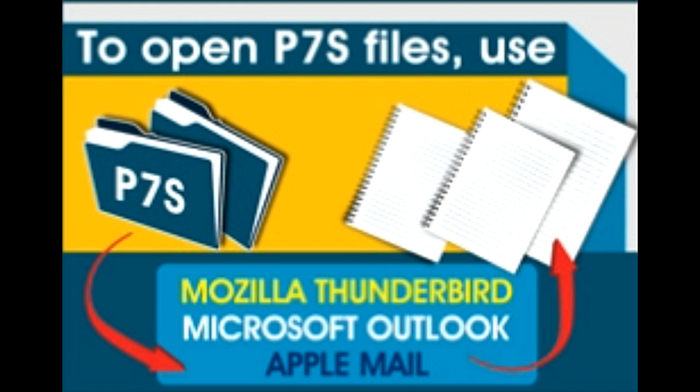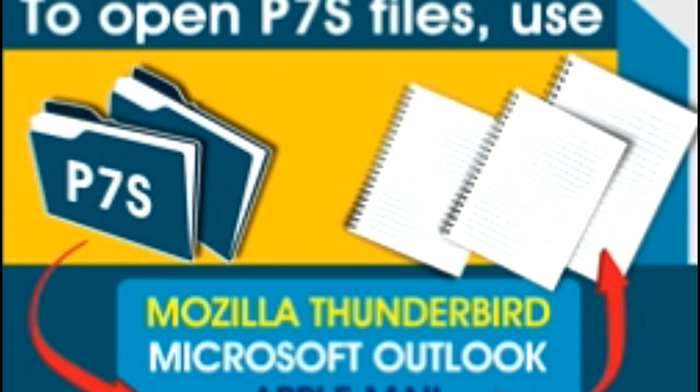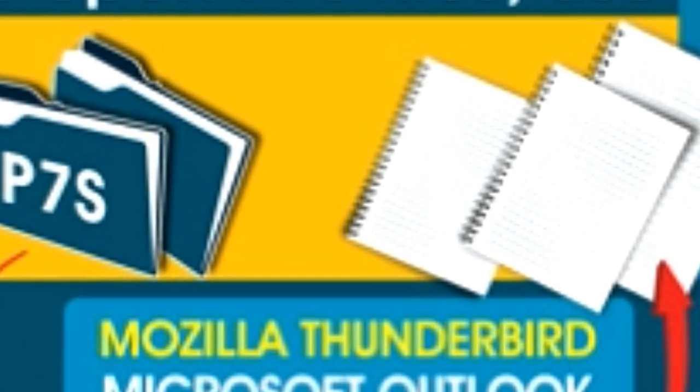These programs are capable of encrypting and decrypting email messages in the P7S format, in order to secure them. Files with this extension also contain certain details, such as the source of origin of the email, date and time when it was sent, whether it has been modified during transmission, etc. The management applications with P7S file support use this information to verify the legitimacy of the received email.